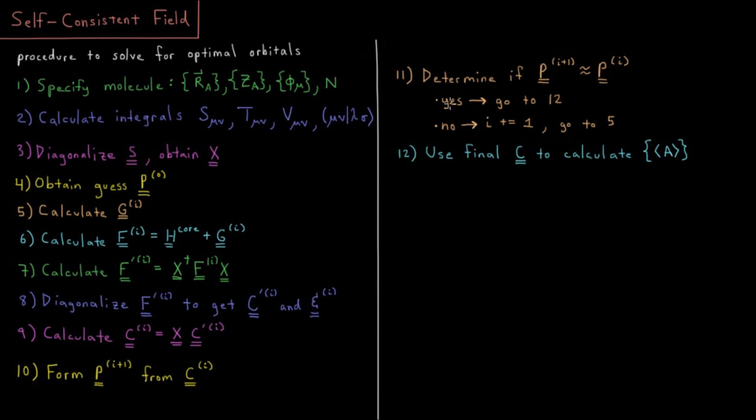Once we have satisfied the criteria for yes on step 11, we go to step 12, and that is use our final coefficient matrix, aka our final molecular orbitals, to calculate whatever properties we want. So the expectation values, those might include things like energy. Those might include things like dipole moment. Whatever kind of chemical or physical property you have of interest for this system, you would calculate that using the C matrix. Because as I've been saying here, the C matrix is the matrix of all of our molecular orbitals.